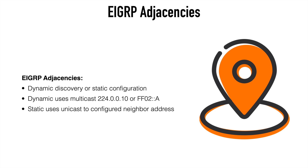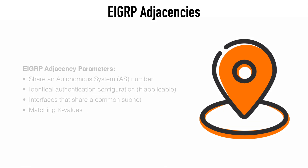An important note with static configuration is that once we specifically indicate a network, EIGRP multicast on the interface used to reach that network will be disabled. So that means if we have multiple routers on a network segment that we want to be EIGRP neighbors, we have to configure all of those routes statically, or ensure that dynamic discovery is happening at the interface level. If we mix and match those configurations, we're not going to properly form adjacencies throughout the entire network.